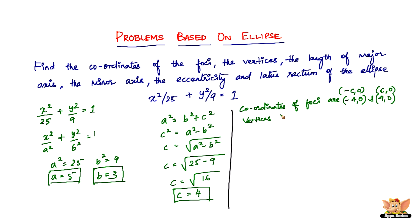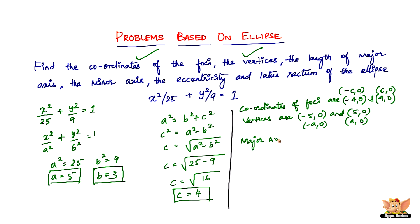Now let's find the vertices. The vertices are at (−a, 0) and (a, 0), so they are (−5, 0) and (5, 0). The length of the major axis is 2a = 2 × 5 = 10, and the length of the minor axis is 2b = 2 × 3 = 6.